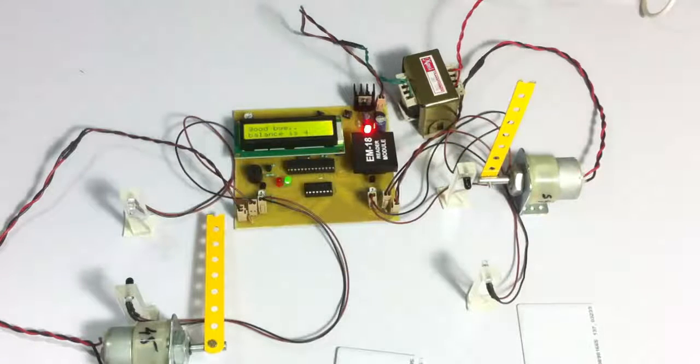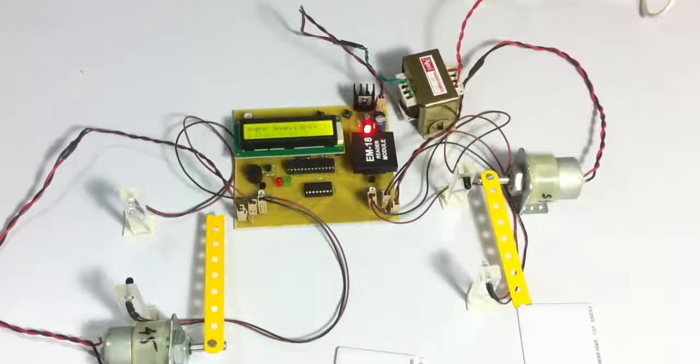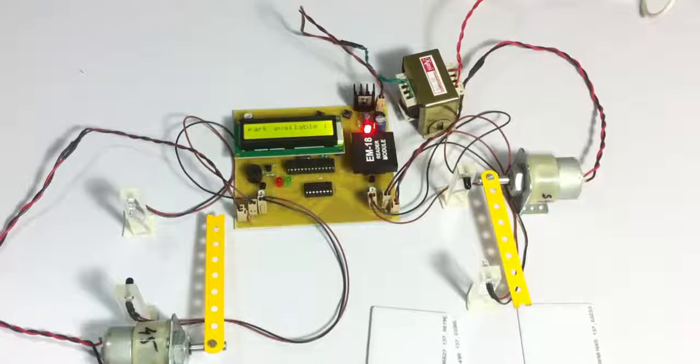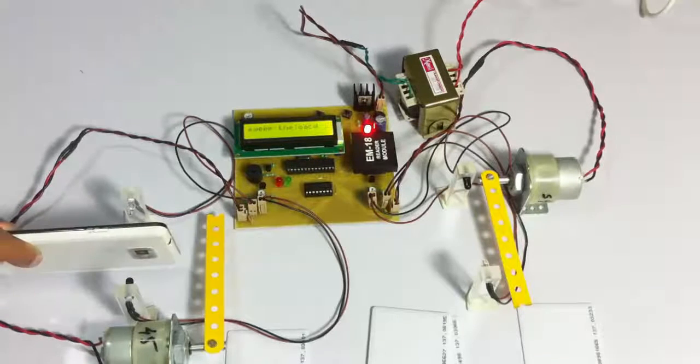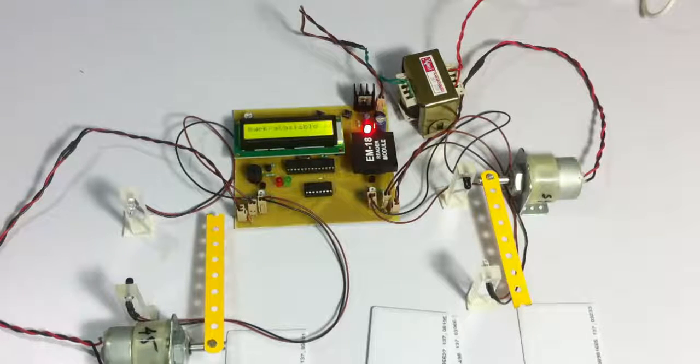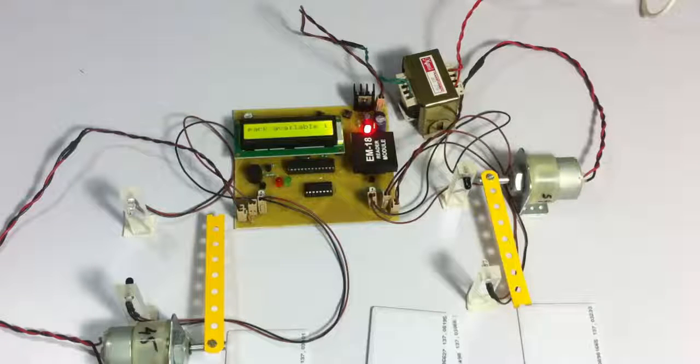So we simulated a vehicle exiting the parking lot. After a vehicle exits, it will allow to swipe the card at the entry. Else it won't. So now let's take a demonstration of an invalid tag.